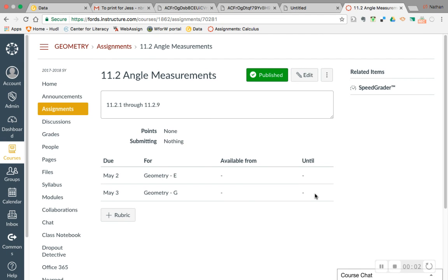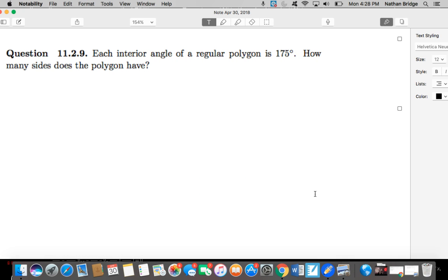A video for section 11.2 angle measurements. This one has that each interior angle of a regular polygon is 175 degrees. How many sides does the polygon have?